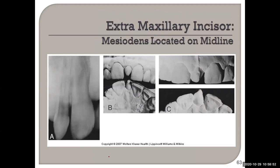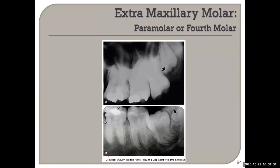There's a mesiodens — and paramolar or fourth molar examples too. Patients will say they had all four wisdom teeth extracted, and then you take another panoramic and there's another one in there.